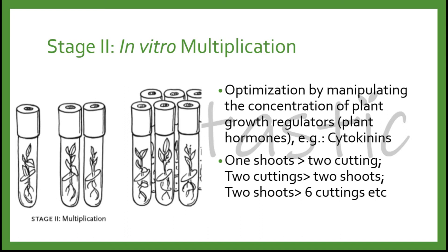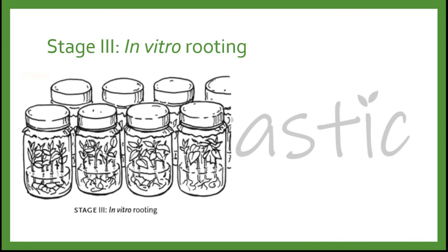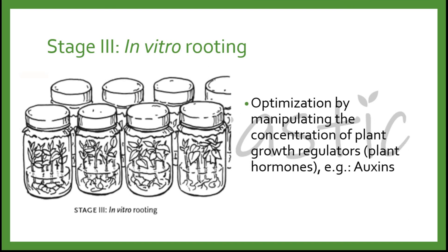Subsequently, Stage 3 is in vitro rooting. The root formation is optimized by changing the concentration of plant growth regulator, mainly auxin, to promote root induction and elongation.